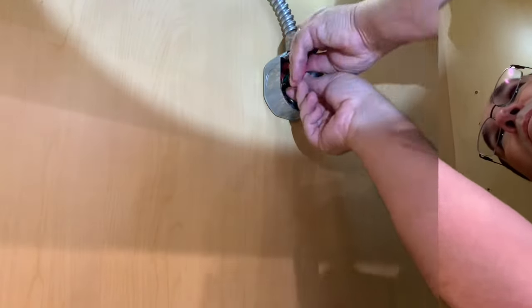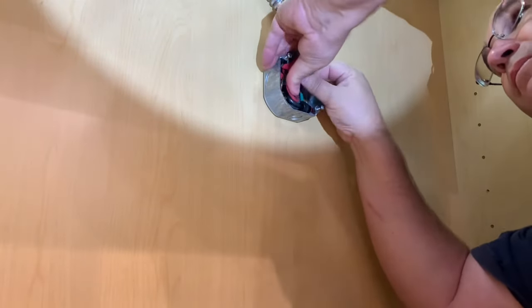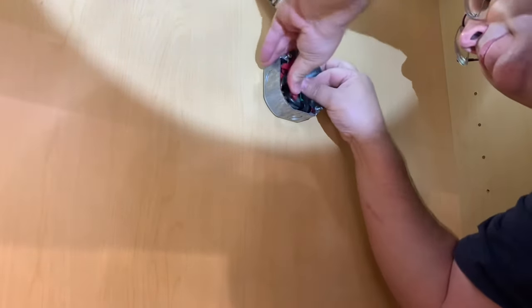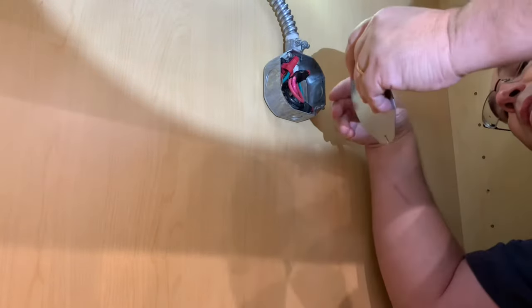Once that's complete, we tuck all the wires into the electrical outlet. It helps if you curve them a little bit, especially with these real stiff thick wires. And then we will reinstall the cover.